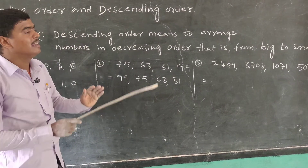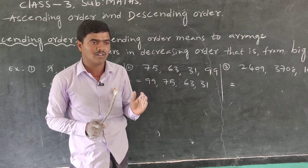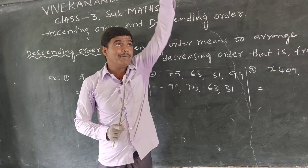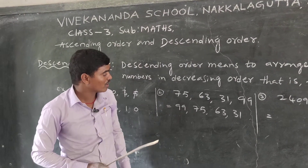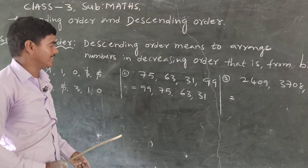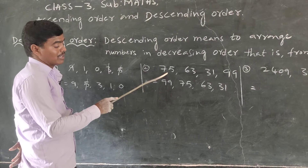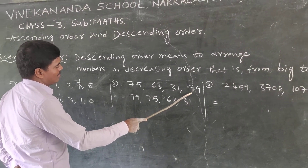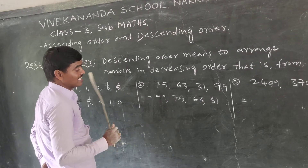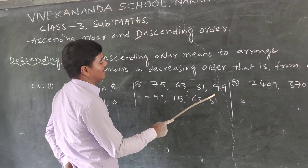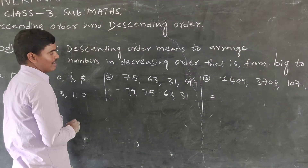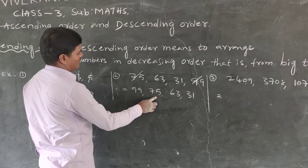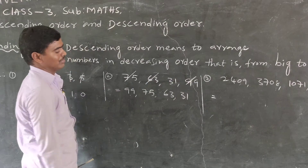Second question. Numbers 74, 63, 31, 99 — arrange in descending order. Descending order means decreasing order, big to small. These are all two-digit numbers. Find the tens place: 90 is biggest, so 99 comes first. Then 75, then 63, then 31.